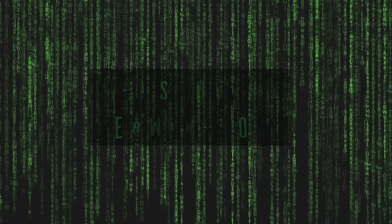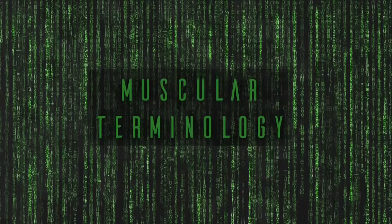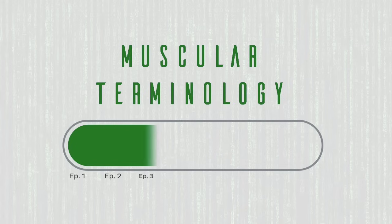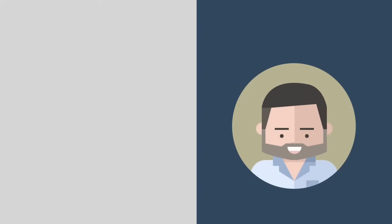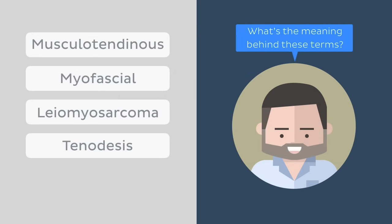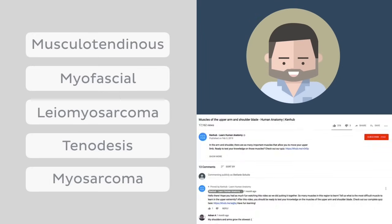Wow, that was quite a lot of information! Hopefully, you feel a lot more confident deciphering the not-so-subtle code that is muscular system terminology. It also brings us one step closer to mastering medical and anatomical terminology. I'll leave you with a challenge — can you figure out what these terms mean based on today's video? Let us know your answers in the comments below.